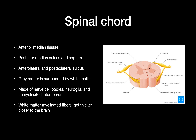The spinal cord has the main big fissure, the anterior median fissure. There's also the posterior sulcus and septum, and the anterolateral and posterolateral sulci. The gray matter is in the center, surrounded by white matter. The gray matter is made of nerve cell bodies, neuroglia, and unmyelinated neurons, while the white matter is the myelinated fibers. It gets thicker closer to the brain in the cervical enlargement. In the very center of the gray matter is the central canal.